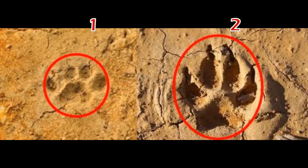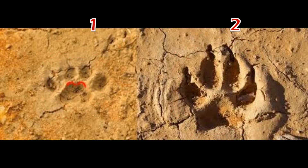Track number one has two humps or lobes on top of the heel pad and a triple lobe on the bottom of the heel pad. Track number two has only a single lobe on the top of the heel pad and does not have a triple lobe on the bottom.